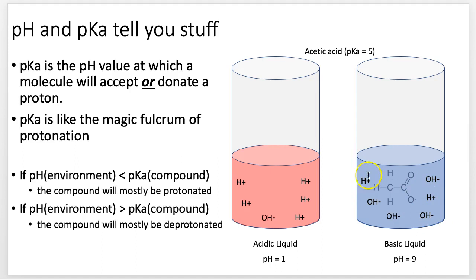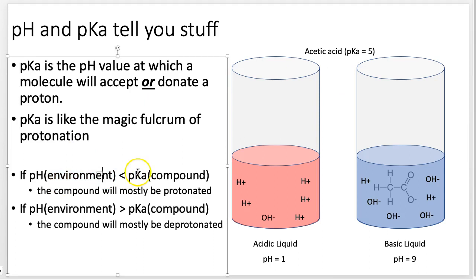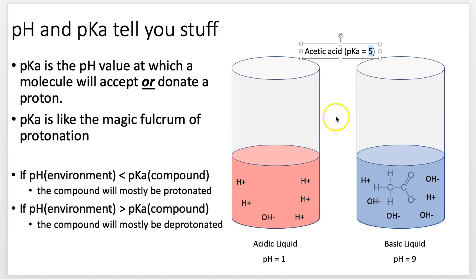If I put the acetic acid into a basic liquid, it loses its hydrogen ion — because the pH of the environment is basic enough to accept the hydrogen it would donate. We don't have to think about it in complex terms: if the pH of the environment is less than the pKa, it's more acidic, and the molecule stays protonated. But if the pH is greater than the pKa of the compound — more basic — then it will deprotonate and lose that hydrogen. So pKa and pH together tell us whether a molecule will give up its hydrogen or not.